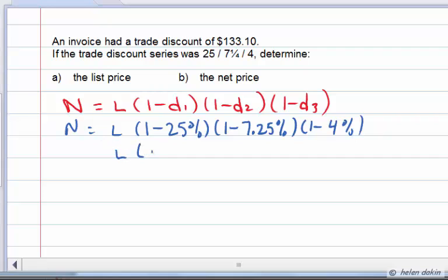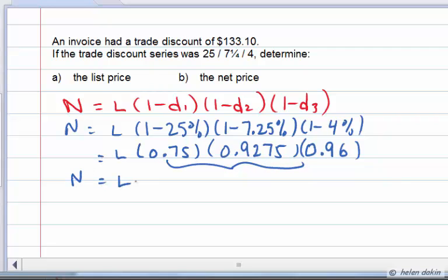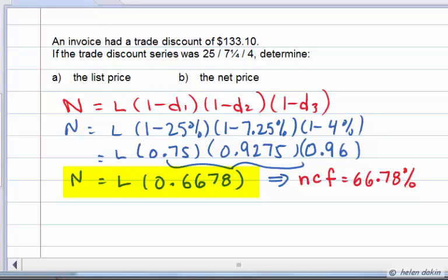So we've got 0.75, our net cost factor for the first trade discount, 0.9275, and 0.96. Those are our three cost factors. Now, let's multiply those three cost factors together, and we end up with net price equals list price times 0.6678. This tells us that the net cost factor is 66.78% of the list price.